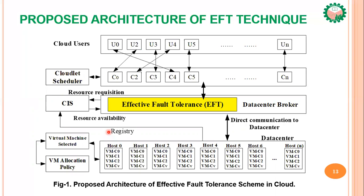The proposed architecture of effective fault tolerance: the cloud consists of multiple users and every user submits multiple cloudlets to the data center broker. We have extended the data center broker to implement the effective fault tolerance technique to detect any errors in cloudlets or results. The data center broker knows the available resources from the CIS table. Specific cloudlets are submitted to a specific virtual machine of a host in the data center, selected by the virtual machine allocation policy. After completing the result, it is submitted to the data center broker, which detects any errors. If the outcome of the error detection mechanism has no error, then the result is accepted by the client.